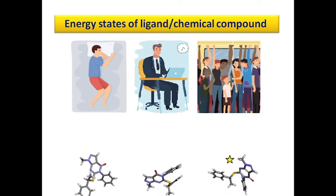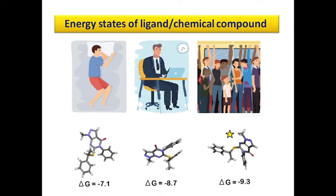Finally, the pose with the highest negative delta G value is always considered as the best pose. You can see this is a ligand molecule, same molecule, but it has attained different pose. And in first pose, the delta G value is minus 7.1, in second pose minus 8.7 and in third pose minus 9.3. So this is the most favorable pose because the delta G value is more negative in this case. So this is about the pose of the chemical compound.